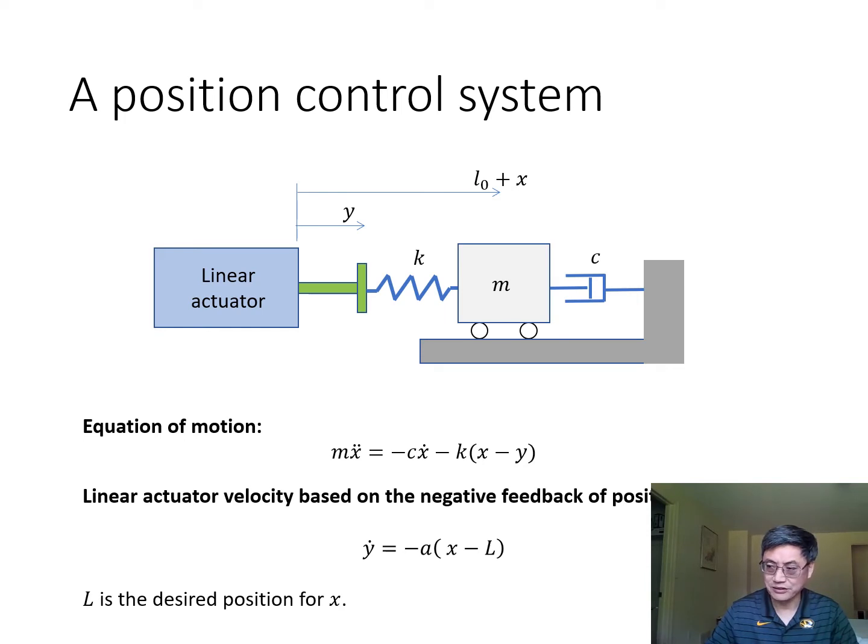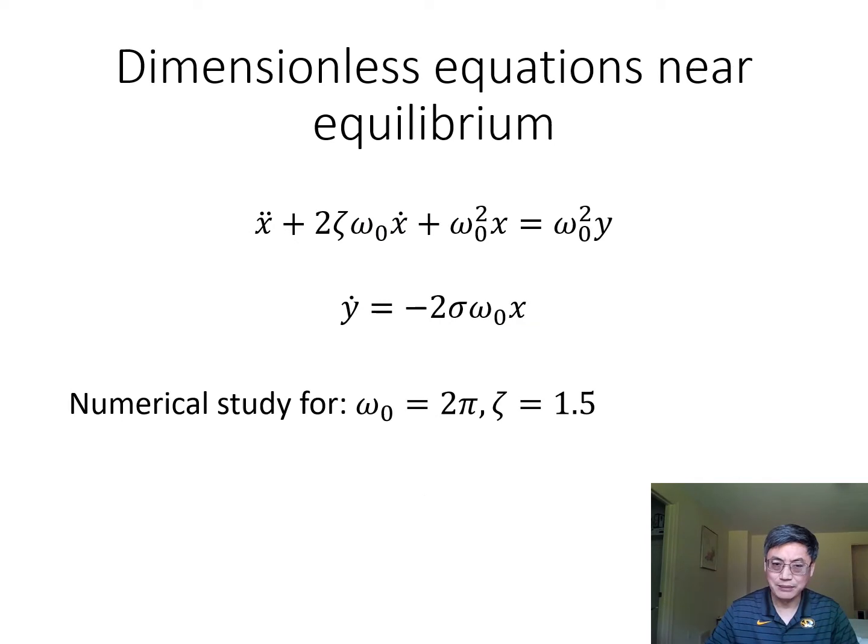This system with several parameters can be reduced in complexity by putting it in a dimensionless form. In this case we have a damping ratio ζ, ω₀ natural frequency, and the gain for the feedback which is σ.